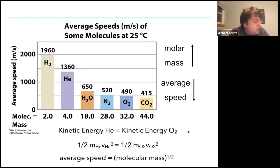And so the relationship is that the kinetic energy of helium is equal to the kinetic energy of oxygen. The mass times the average velocity squared are equal. So therefore we'd say one-half mass helium velocity helium squared is equal to one-half the mass of oxygen velocity squared. And you can rearrange that to see that the average speed is proportional to the square root of the molecular mass.